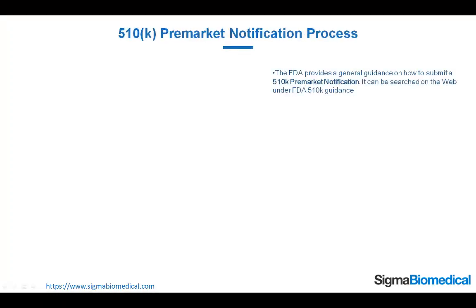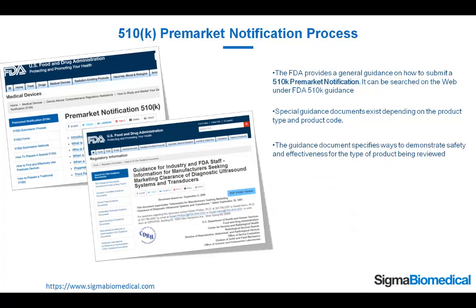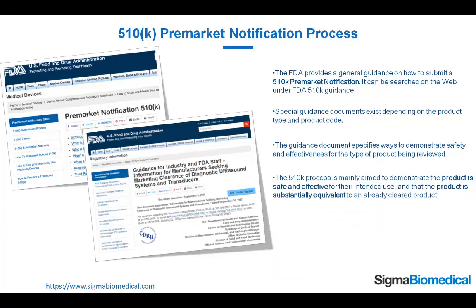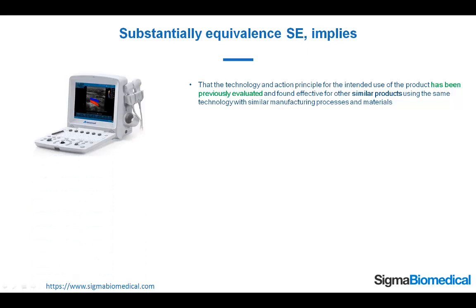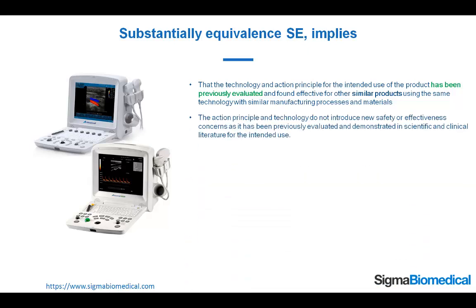510k Pre-Market Notification Process. The FDA provides general guidance on how to submit a 510k premarket notification — it can be searched on the web under 'FDA 510k guidance.' Special guidance documents exist depending on the product type and product code, and they specify ways to demonstrate safety and effectiveness for the type of product being reviewed. The 510k process is mainly aimed to demonstrate the product is safe and effective for their intended use and that the product is substantially equivalent to an already cleared product. Substantially equivalent (SE) implies that the technology and action principle for the intended use of the product has been previously evaluated and found effective for other similar products using the same technology, with similar manufacturing processes and materials. The action principle and technology do not introduce new safety or effectiveness concerns, as has been previously evaluated and demonstrated in scientific and clinical literature for the intended use.